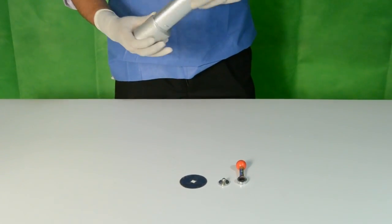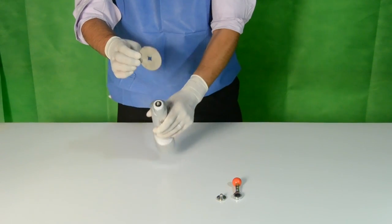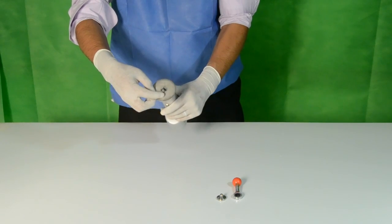The serrated blade is placed on top of the handpiece, watching that blade entries correspond to the handpiece prominences.